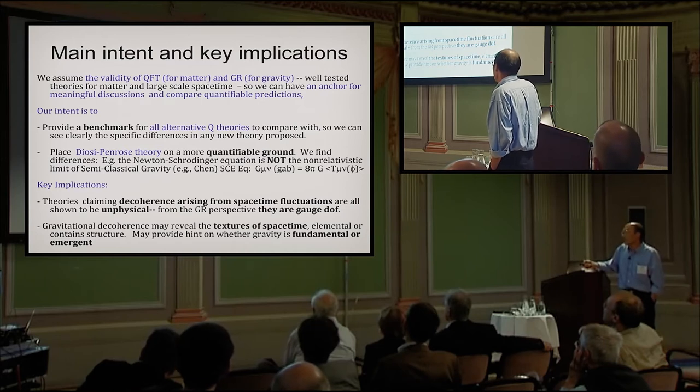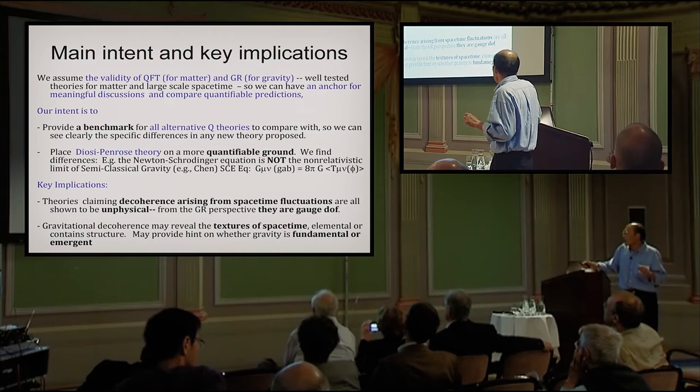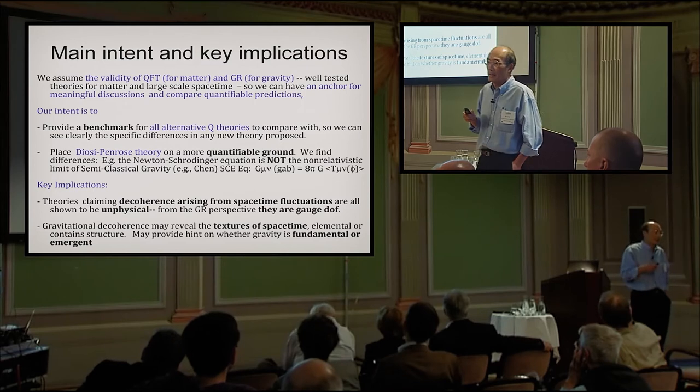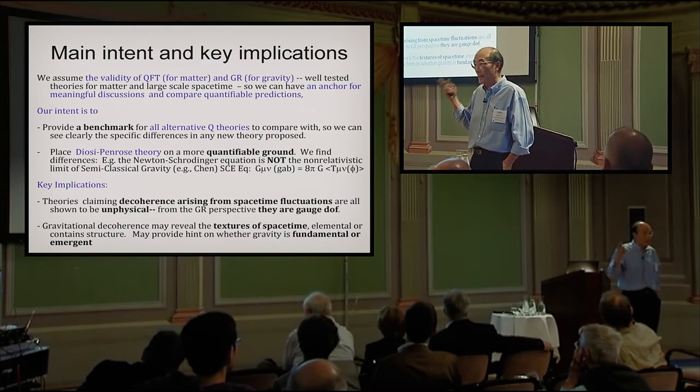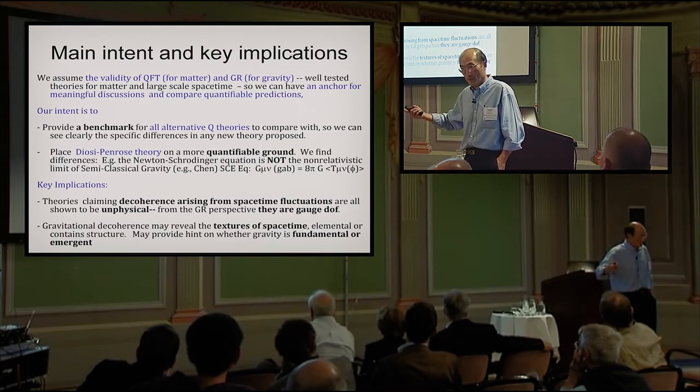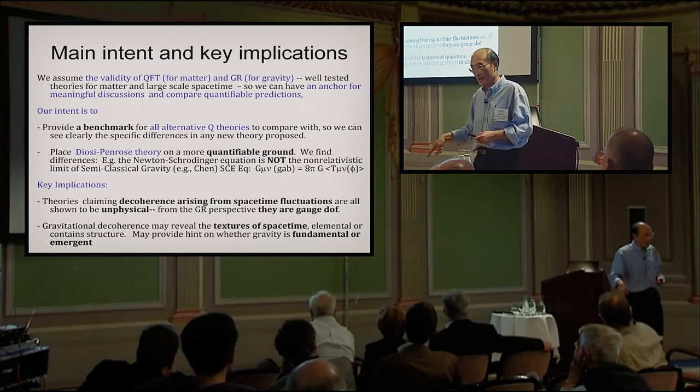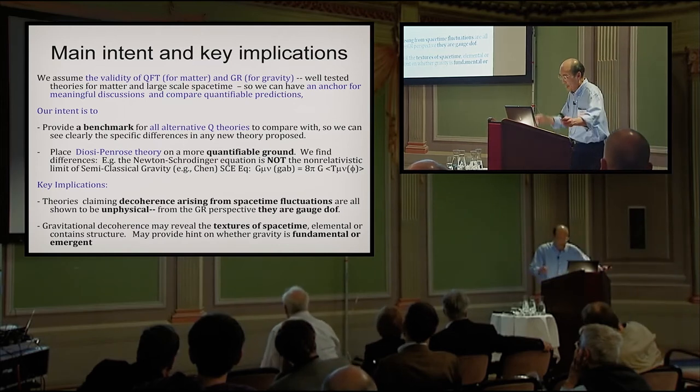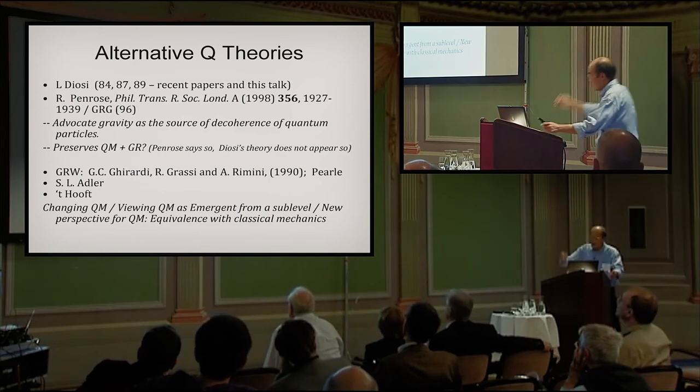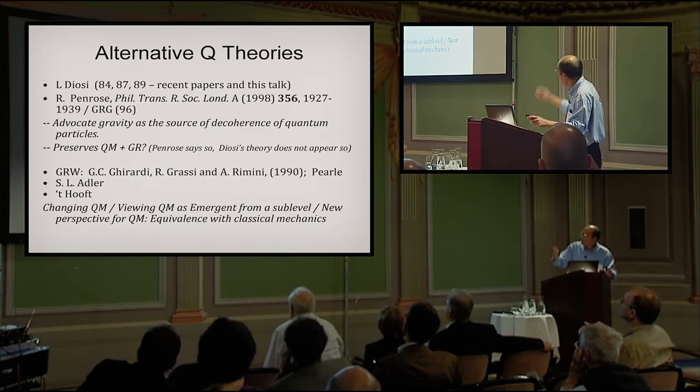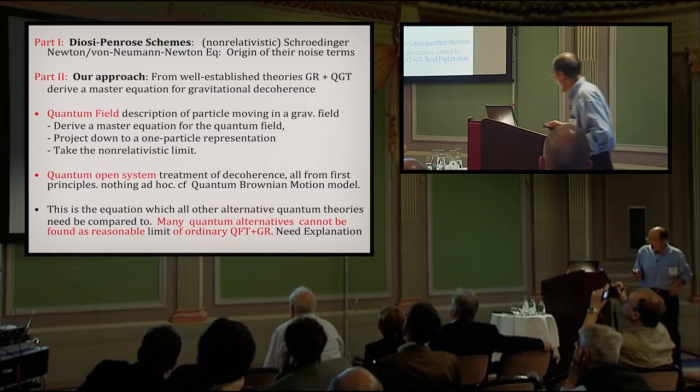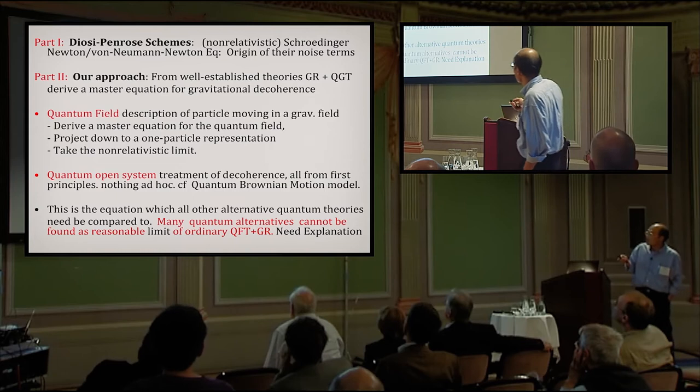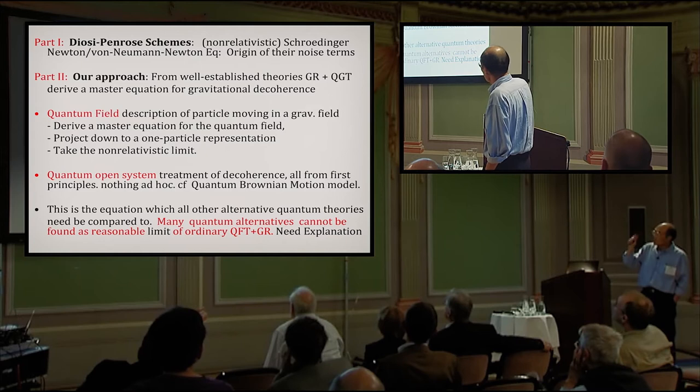The second point is the gravitational decoherence may reveal the textures of space-time, either elemental or contained structure. That might shed some light on whether gravity is fundamental or emerging. By that I mean, simply, if you draw the analogy with quantum Brownian motion, we know that in addition to the temperature of the bath, there's a very important property which is spectral density of the bath. So you're not seeing the atoms directly, but you're looking at the density of state of that bath function.